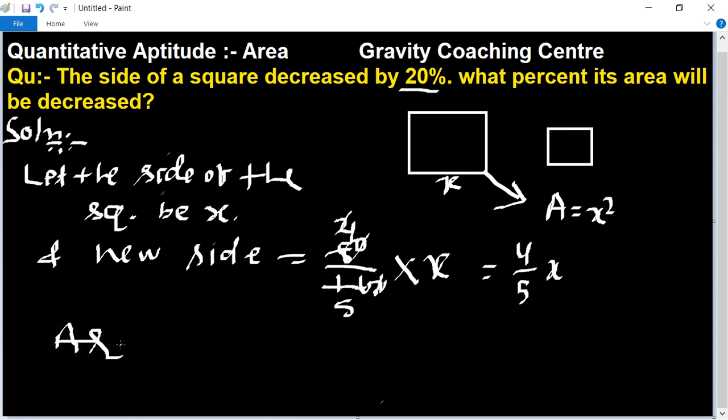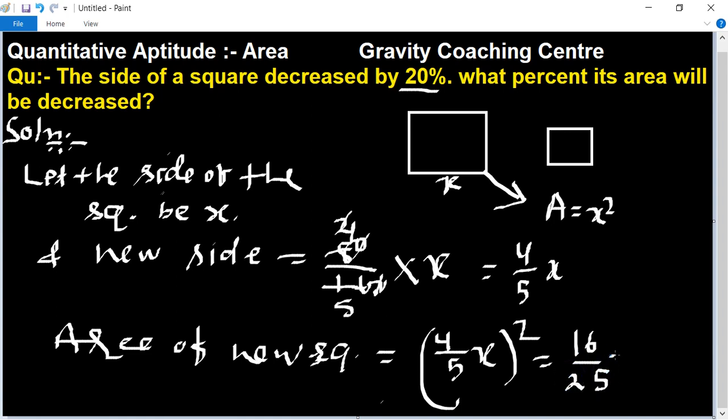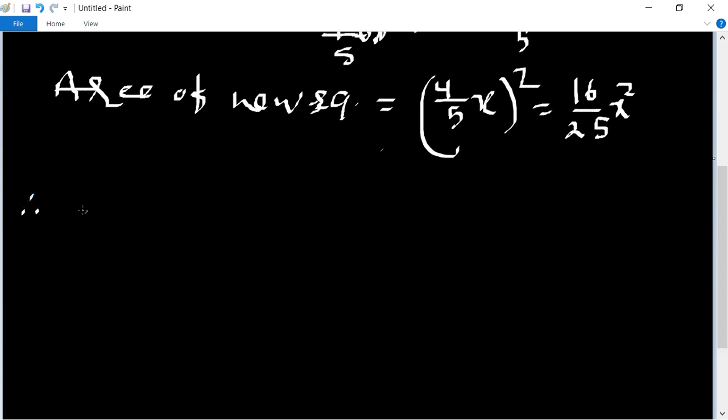Square equal to side square, means 4 upon 5 x whole square, equal to 16 upon 25 x square. Therefore...